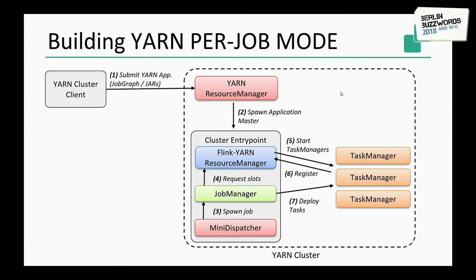In Yarn, you tell the Yarn resource manager to spawn the application master, which will contain the dispatcher and the Yarn-specific resource manager. In Mesos, this will be quite similar. These building blocks are very generic and interchangeable where they need to be.